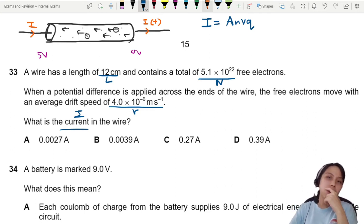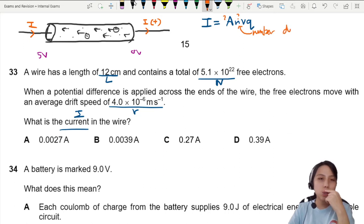How do we find that? We have a problem here. We don't know A, we also don't know small n. Small n is number density, which also means if this is, let's say, a copper wire, there are number of free electrons per unit volume. That is number density.